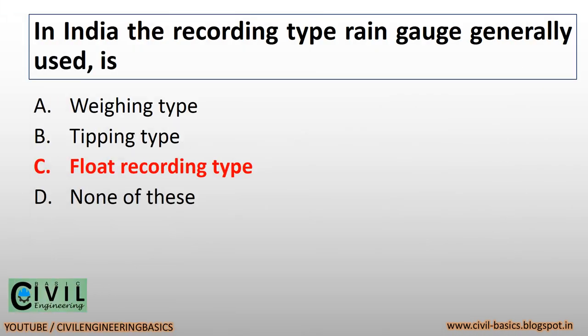In India, the recording type rain gauge generally used is the float recording type.